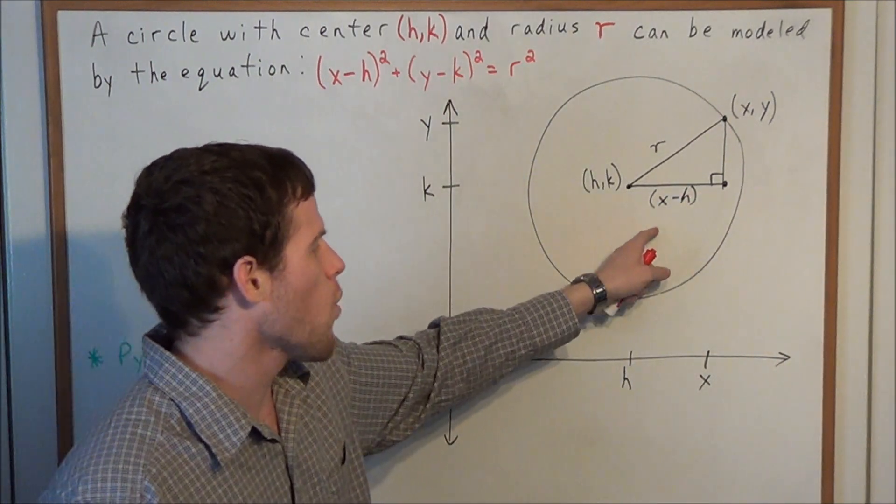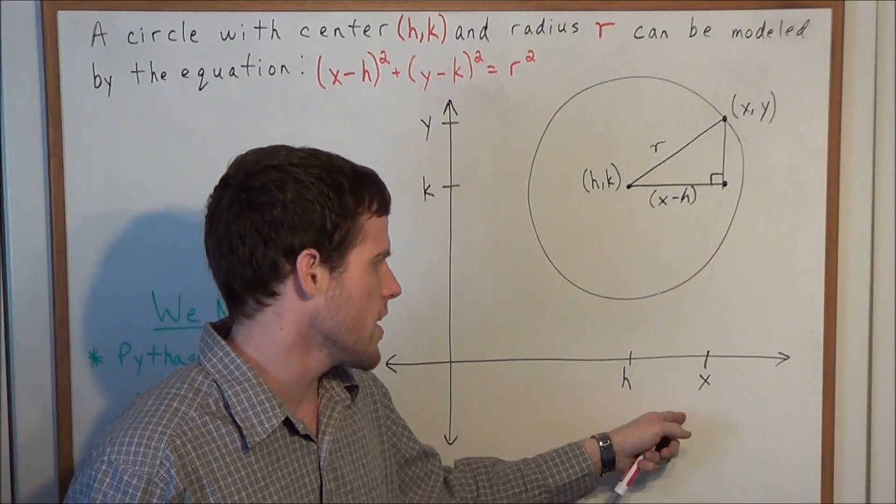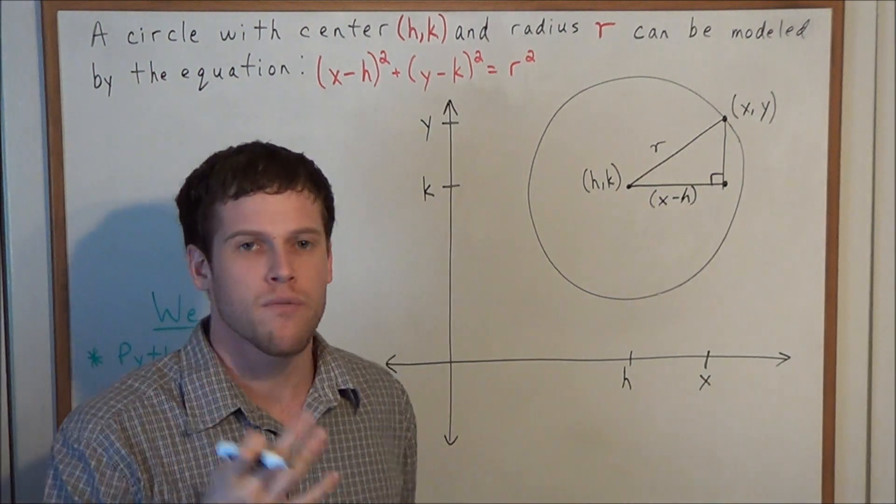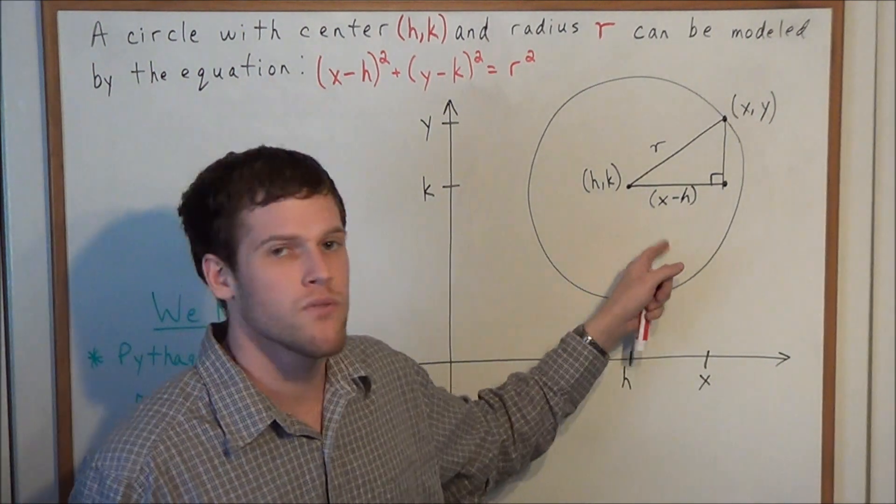And now to convince yourself of why this works, let's say x was 10 and h was 5. 5 and 10 are 5 apart and 10 minus 5 would give you that length.